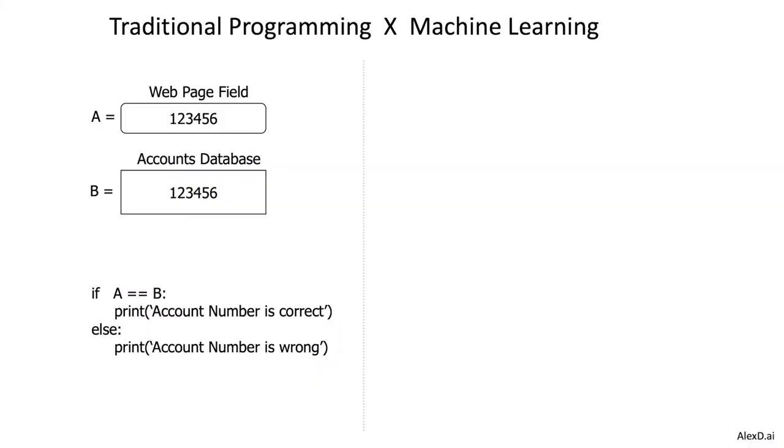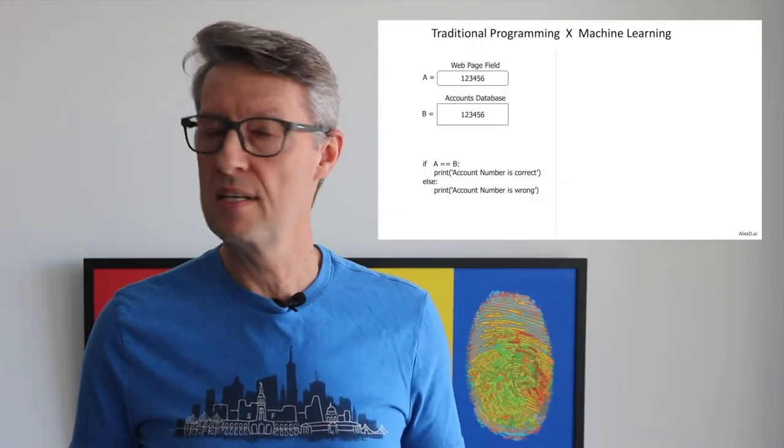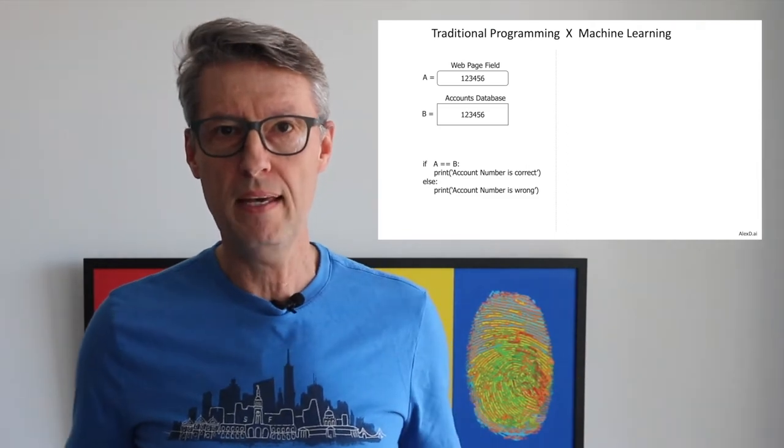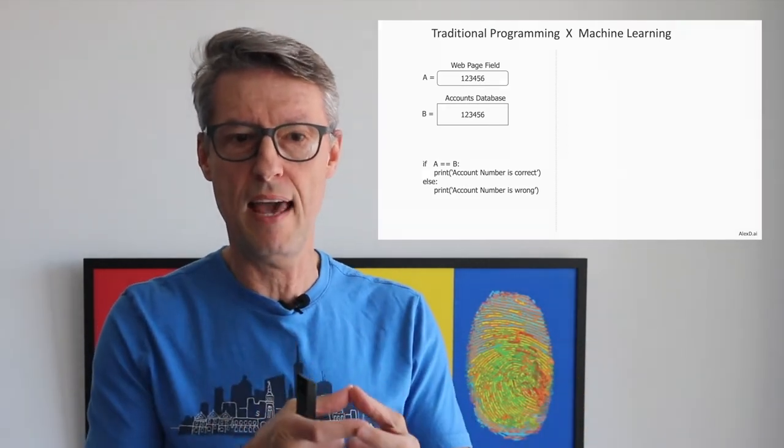Traditional programming is very good at dealing with numbers. For example, if you're filling out a form on a web page and enter your banking account number, the bank has that number stored in a database. To compare the two values, A and B — the number you typed versus the number in the database — it's very easy: just an if clause, A equals B. If they're the same, the answer is 'account number correct'; if not, 'account number wrong.' It's easy and determined — either equal or not equal.